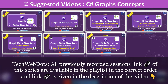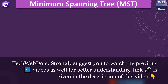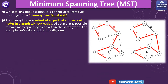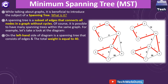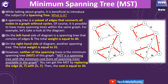Before moving ahead, understanding of minimum spanning tree is very important, which I have already explained in my last session, but just to remind you let me explain one more time. A minimum spanning tree is a tree which is a subset of edges that connect all nodes in a graph without a cycle. It is very important — without cycle. We can also say a minimum spanning tree is a spanning tree with minimum cost from all the spanning trees available in the graph.